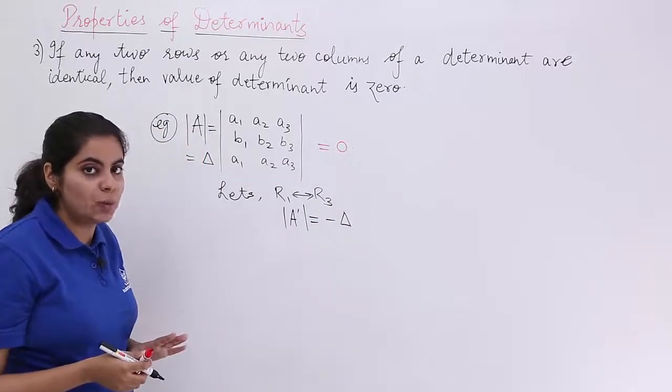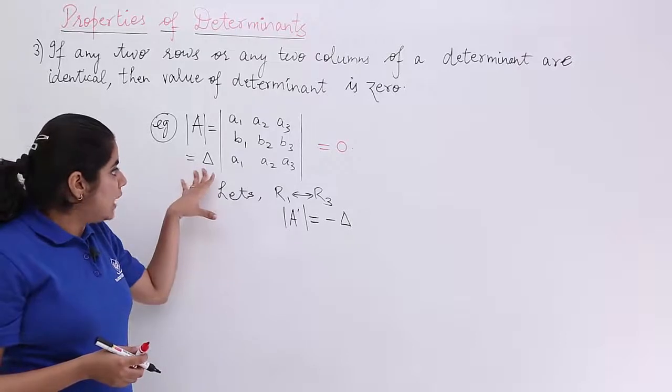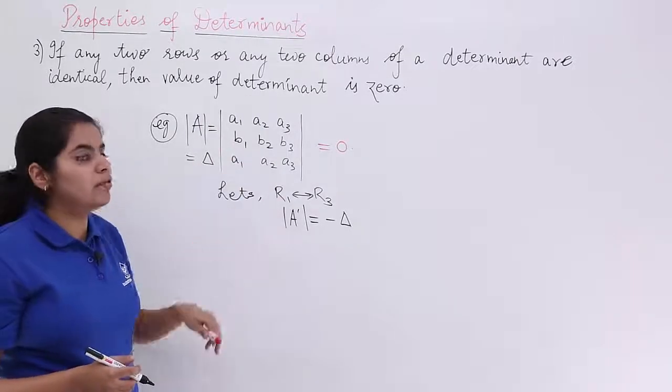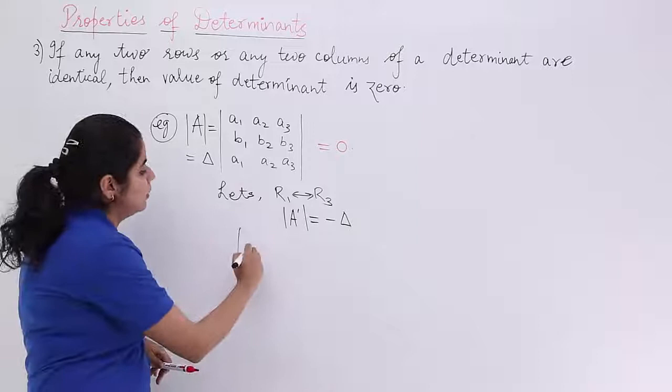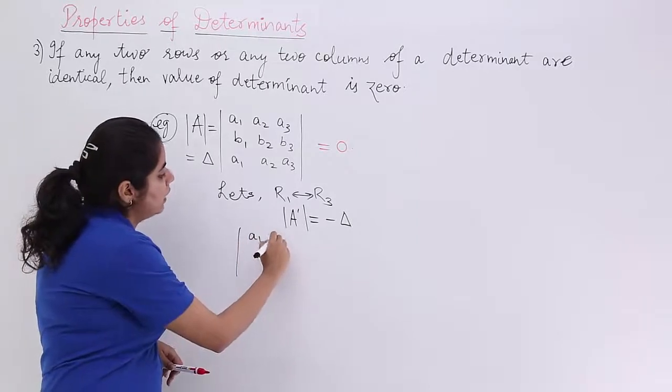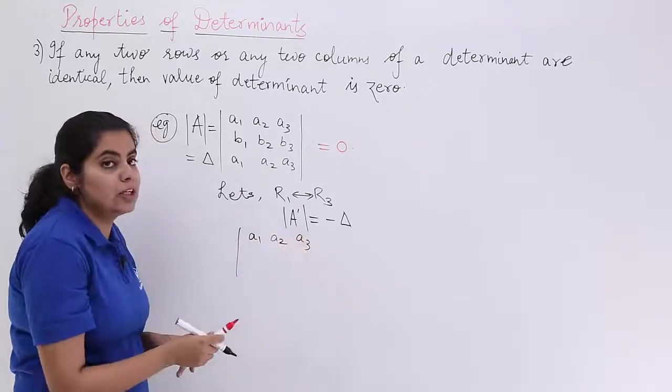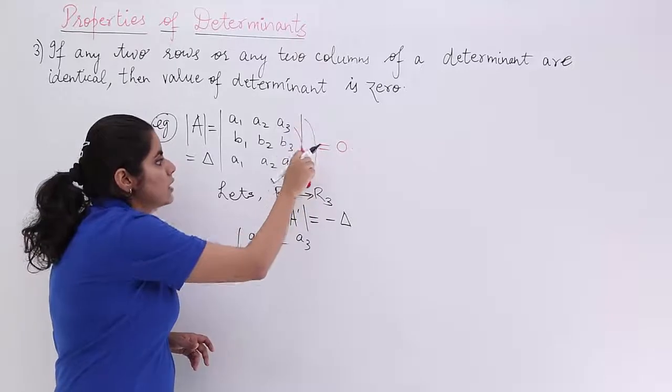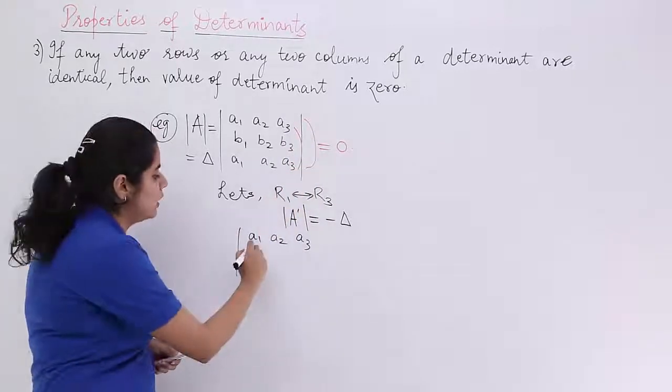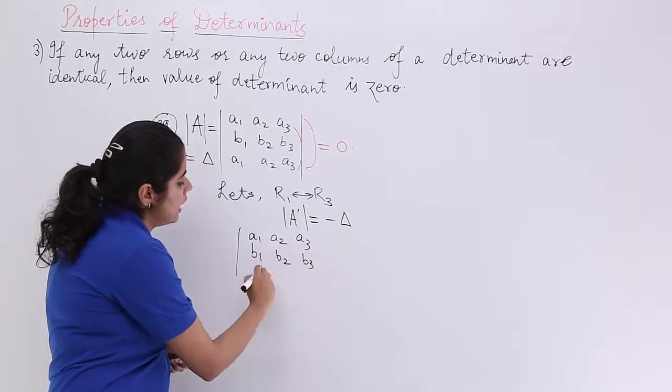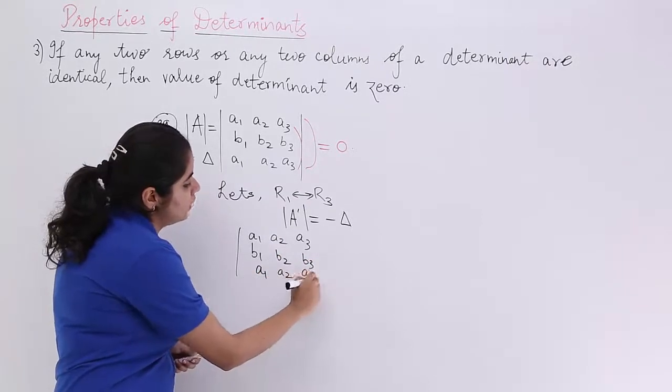You know that from the previous property. Now, if del is something called as this and even after interchange, r1 and r3 will become what? You have a1, a2, a3. You interchange. This goes here. This comes here. Again, it is same only. So no change. b1, b2, b3 and here also it is a1, a2, a3.